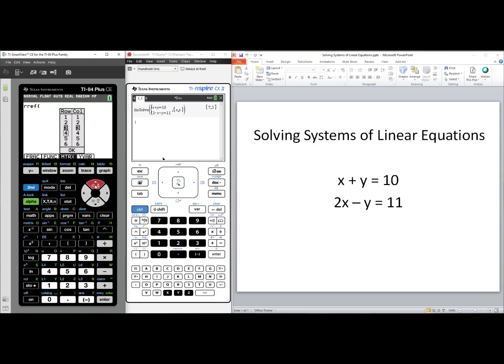Use your arrows to navigate the number of rows and columns. We need two rows and three columns. Press Enter to select 2 and 3. Then select OK. Now put in our coefficients, 1, 1, 10, 2, negative 1, 11.